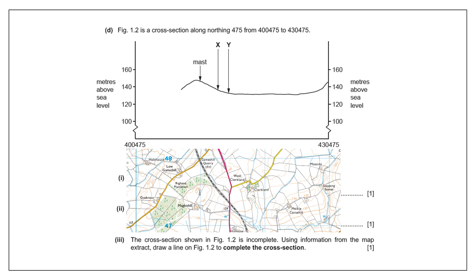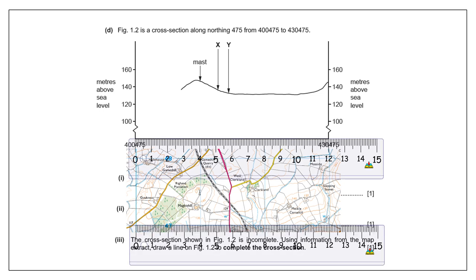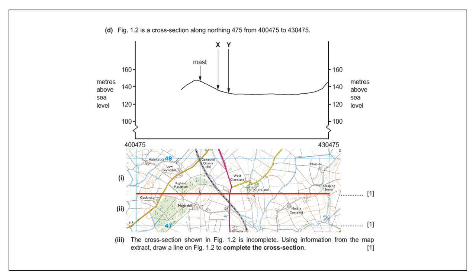The cross-section questions are perhaps the hardest ones in this exam paper. We first have to identify features X and Y. The map extract and the exam paper are exactly the same dimensions. Plot the six-figure grid references of the two end points from Figure 1.2 — 400475 and 430475 — drawing that line on the map. Each line is 12 centimeters. Once the red line is plotted, you can start answering the question.